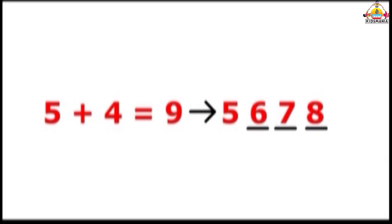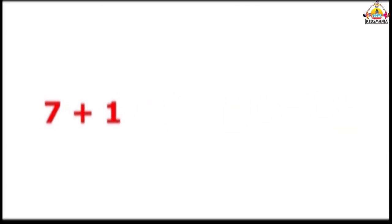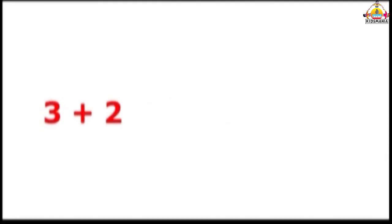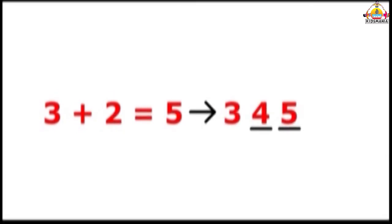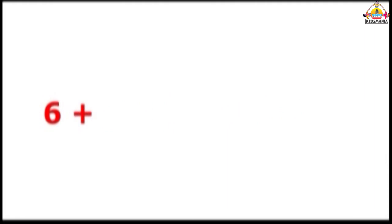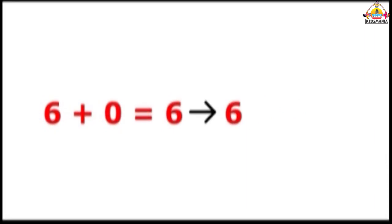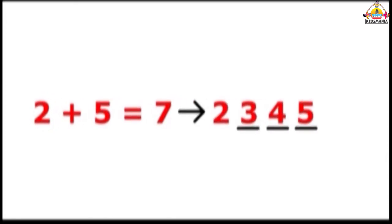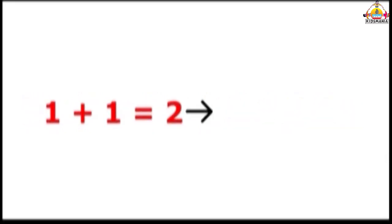6, 7, 8, 9. 7 plus 1 is equal to 8. 3 plus 2 is equal to 5, 4, 5. 6 plus 0 is equal to 6. 2 plus 5 is equal to 7, 3, 4, 5, 6, 7. 1 plus 1 is equal to 2.